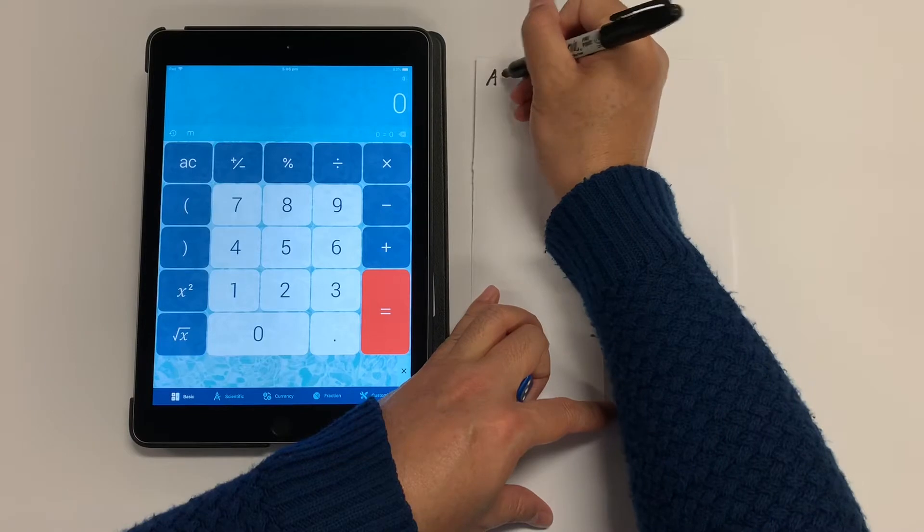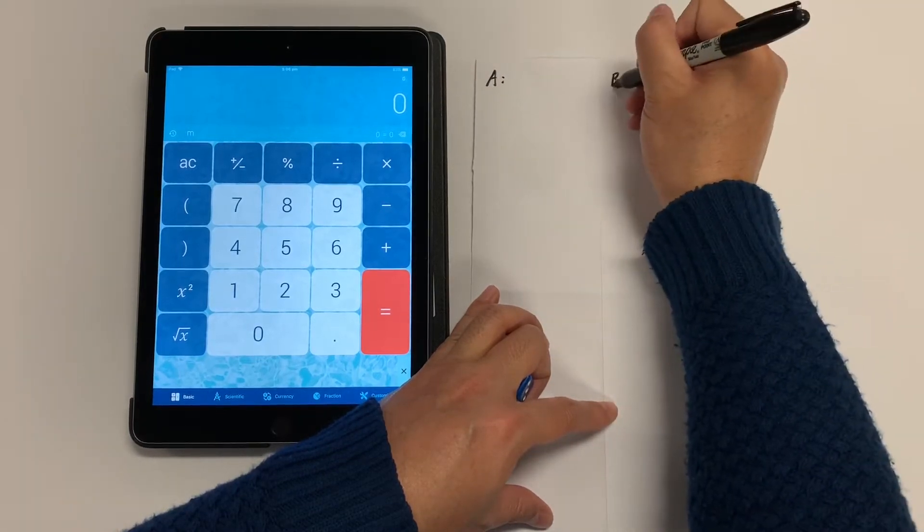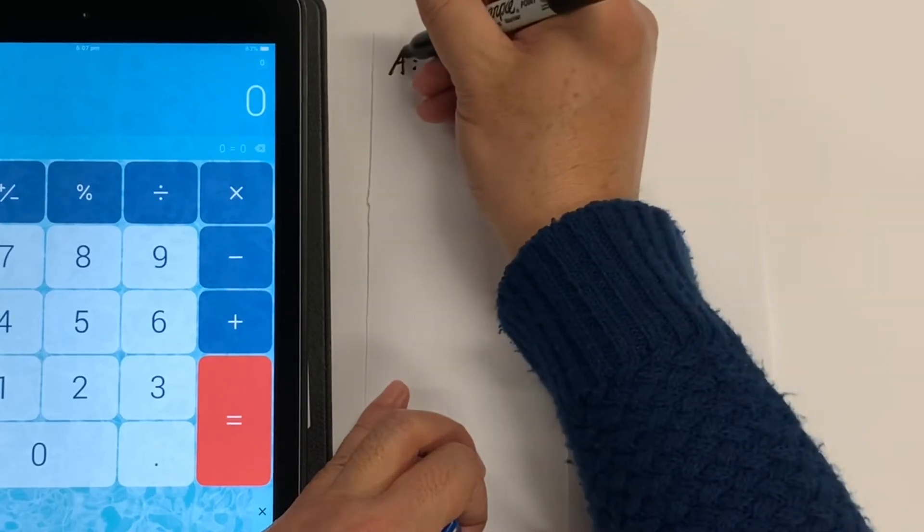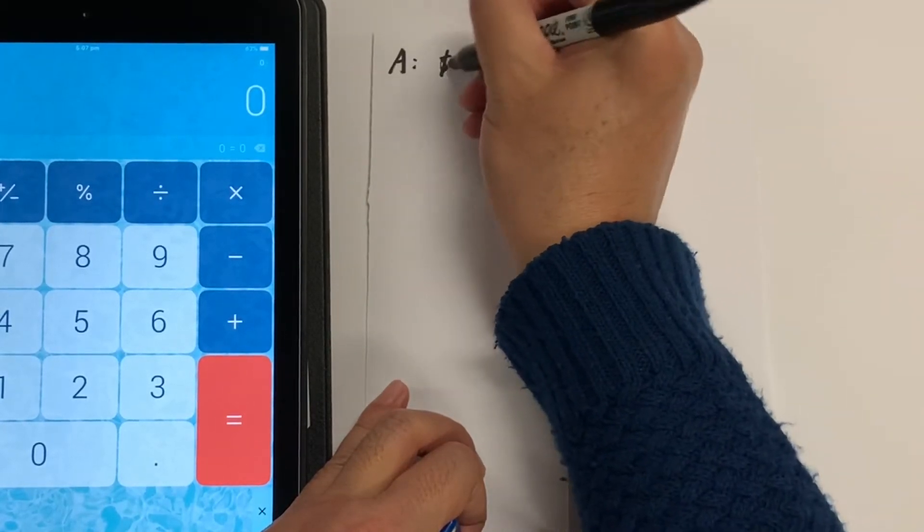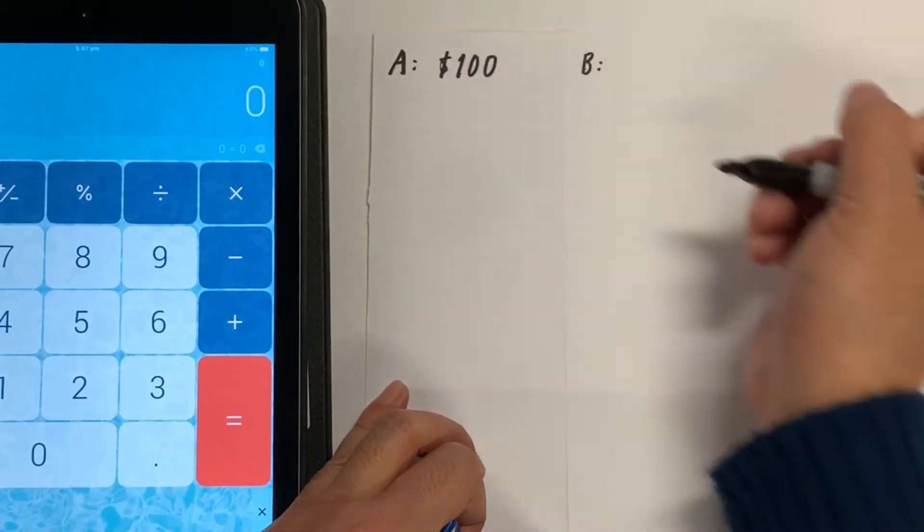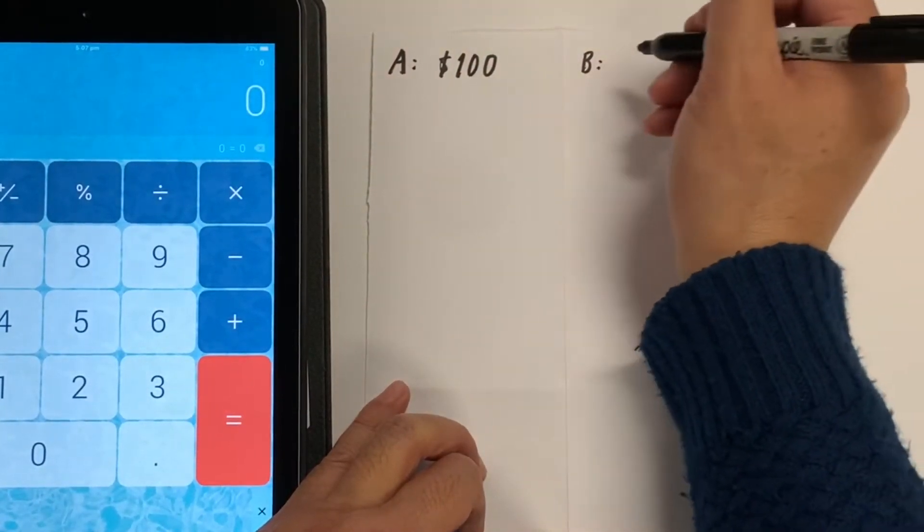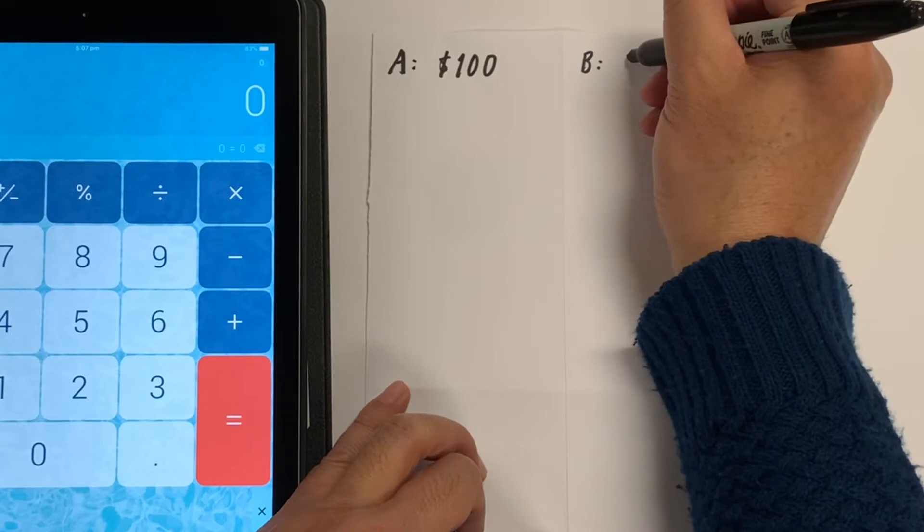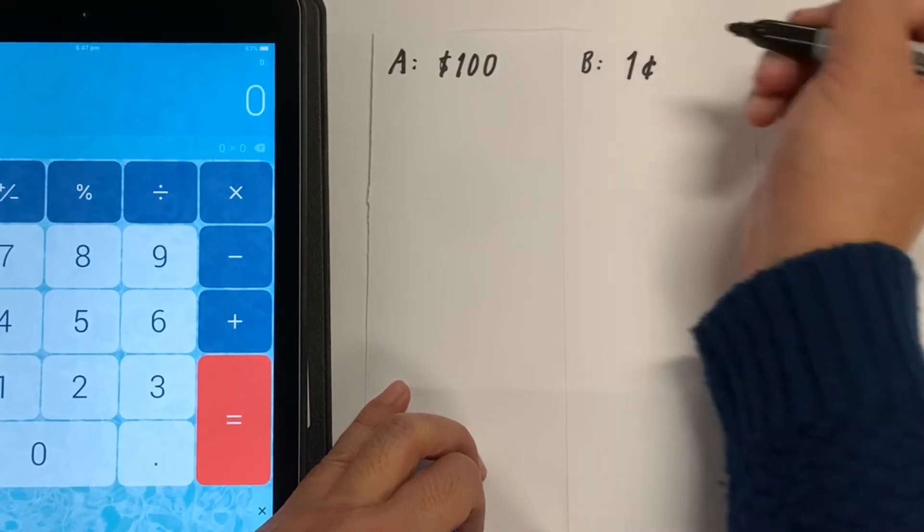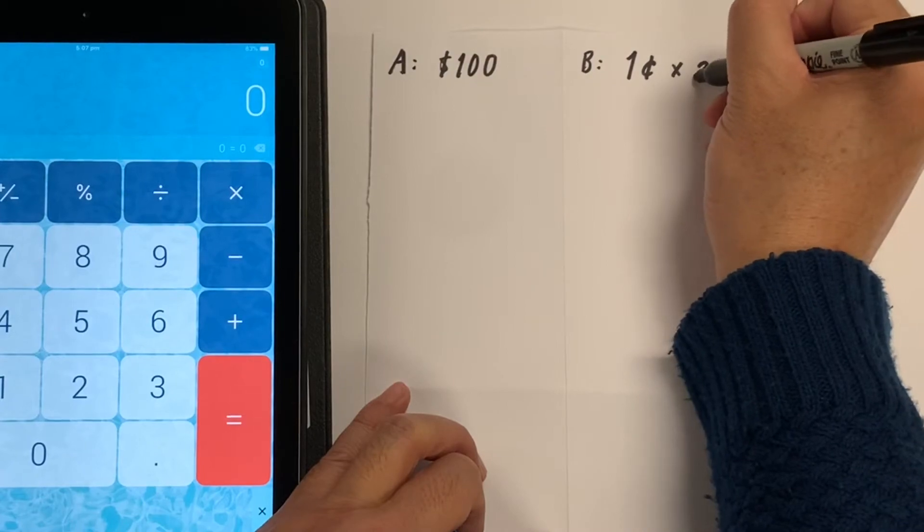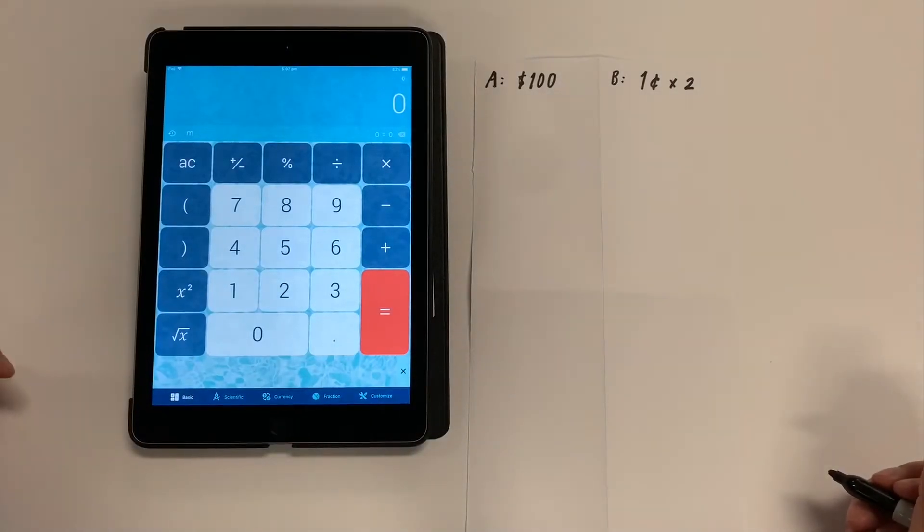There are two types of employees here in my company. Employee A will receive $100 every day. This is daily wage. And employee B will receive one cent for the first day, and every day his wage or her wage will be doubled.